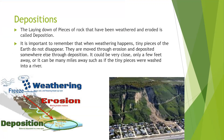The laying down of pieces of rock that have been weathered and eroded is called deposition. It is important to remember that when weathering happens, tiny pieces of the earth don't just disappear — they're moved through erosion and then deposited somewhere else through deposition. It could be very close, like only a few feet away, or it could be many miles away, such as if the tiny pieces were washed into a river.